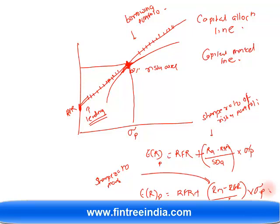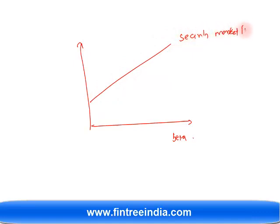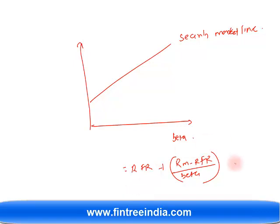The last line in the series is the security market line (SML). Standard deviation reflects total risk, which includes both unsystematic and systematic components. Investors should only be compensated for systematic risk. Therefore, instead of standard deviation on the x-axis, we use beta. The SML equation is: E(Rₚ) = RFR + (Rₘ − RFR) / βₘ × βₚ. Since beta of the market is always 1, this simplifies to: E(Rₚ) = RFR + (Rₘ − RFR) × βₚ.